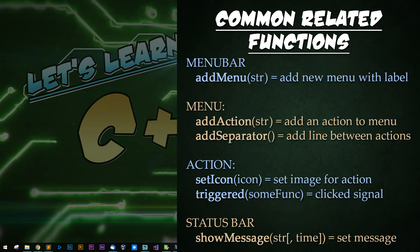Within an action, you can set an icon — actions themselves can have the icon set. And of course, the triggered signal is the main signal we use for connecting the user's click to some function. Finally, for the status bar, showMessage can be used to show a message in the status bar for an optional amount of time.